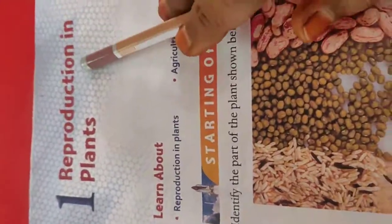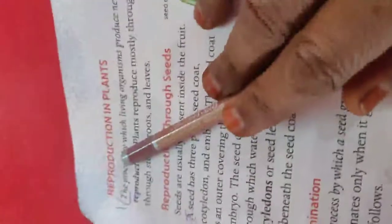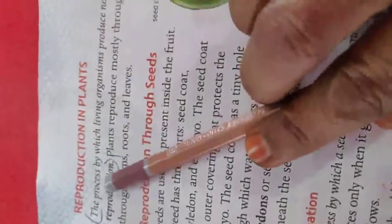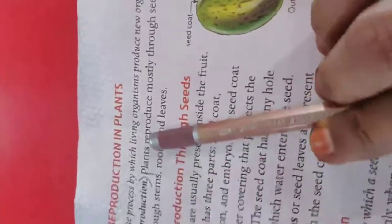Good morning to all. Now we see the lesson, Reproduction in Plants, Book Reading. Reproduction in Plants. The process by which living organisms produce new organisms of the same kind is called Reproduction.